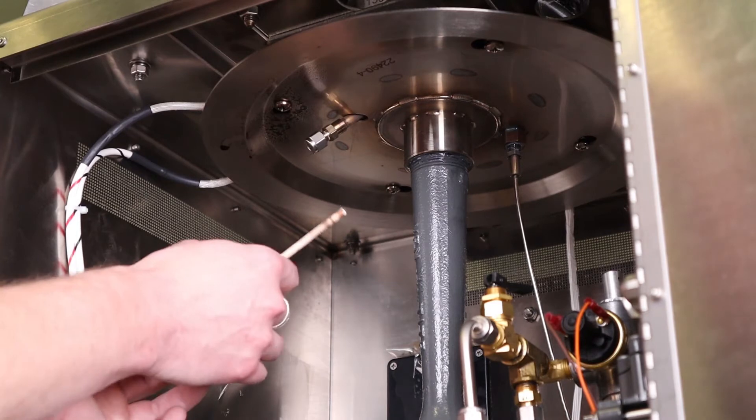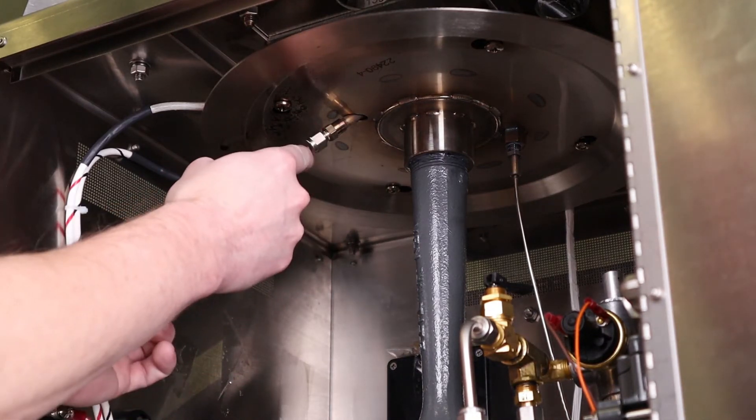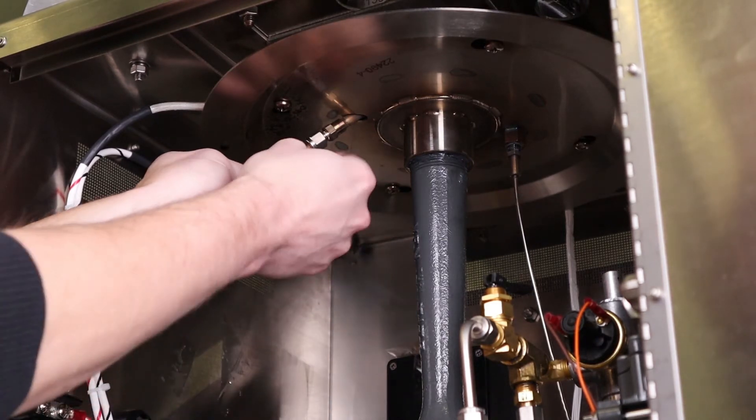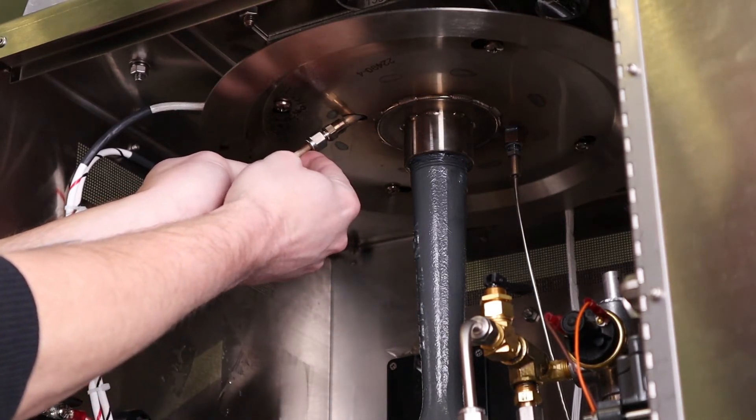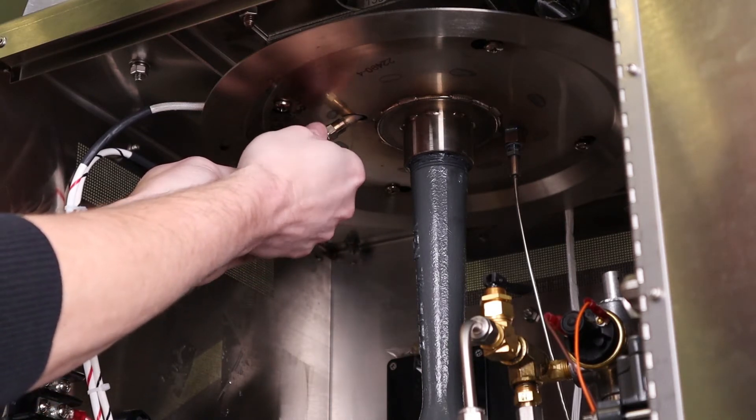Next we're going to install the spark igniter electrode into the fitting on the bottom of the burner. Put it in and slide it all the way in until you feel it bottom out, then pull it back approximately a quarter inch or six millimeters and hand tighten the fitting.